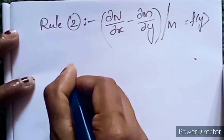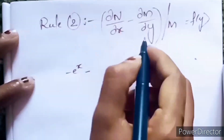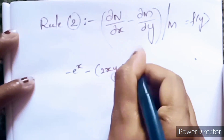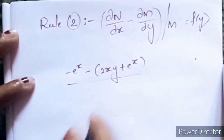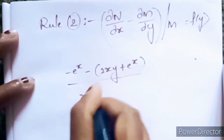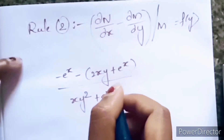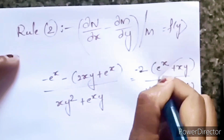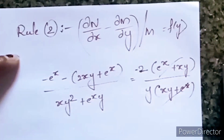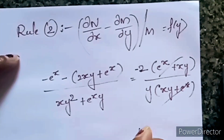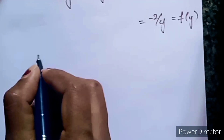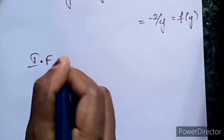Now ∂N/∂x is −eˣ, minus ∂M/∂y which is 2xy + eˣ, divided by M which is xy². The eˣ terms get cancelled, leaving −2xy divided by xy², which simplifies to −2/y. This is in the form of f(y).